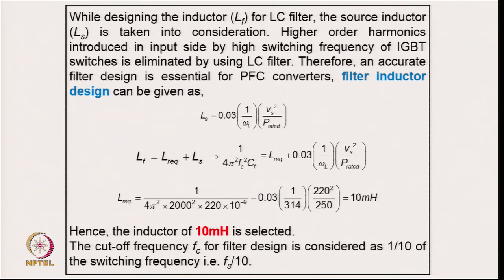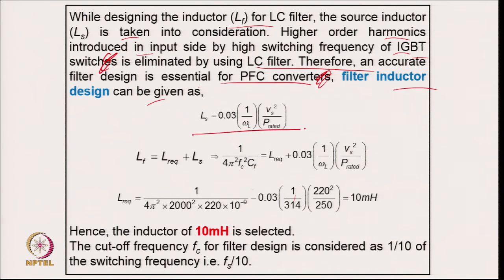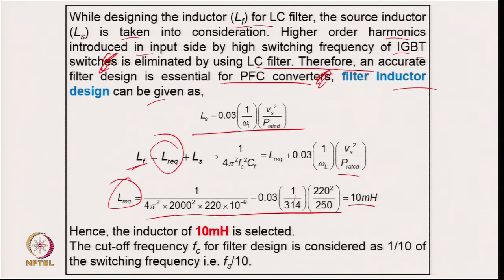Coming to the AMI filter inductor design: while designing the inductor for the LC filter, the source inductor is taken into consideration. Higher-order harmonics introduced by the switching frequency are eliminated by the LC filter; therefore, accurate filter design is essential. The filter inductor design for source inductance uses the standard relation where total inductance equals source inductance plus required inductance. Putting in all values gives 10 mH; therefore 10 mH is selected with the cutoff frequency at one-tenth of the switching frequency.